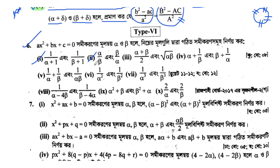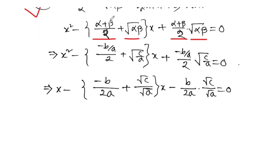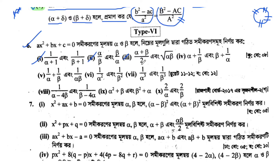The method today is: the sum of roots alpha plus beta by 2 plus root over alpha beta, and the product is alpha plus beta by 2 times root over alpha beta. So alpha plus beta equals minus b by a divided by 2, and root over alpha beta equals root of c by a. After calculation, I get minus b by twice a, and root over c by a. Then the equation is x squared minus (sum)x plus (product) equal to zero.